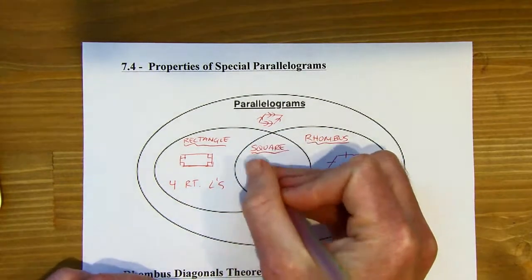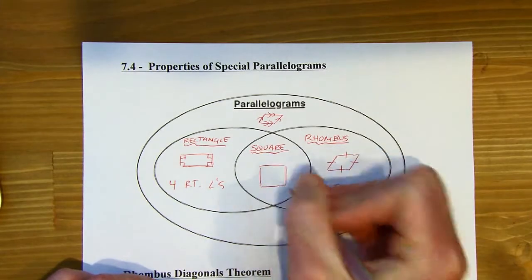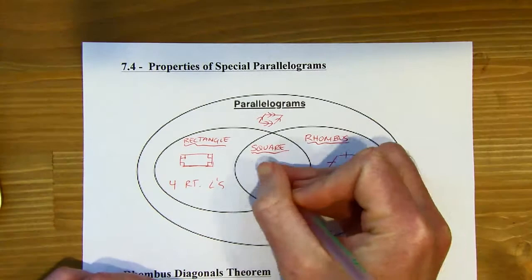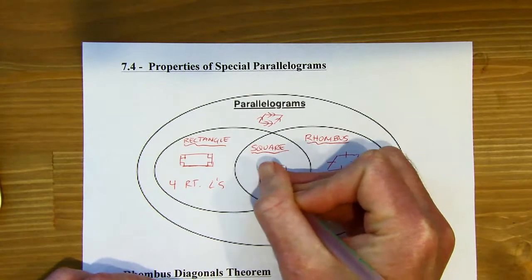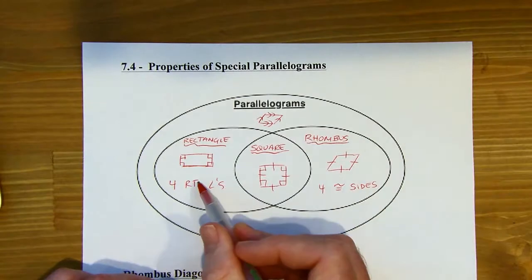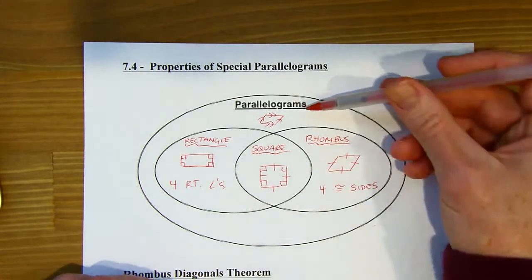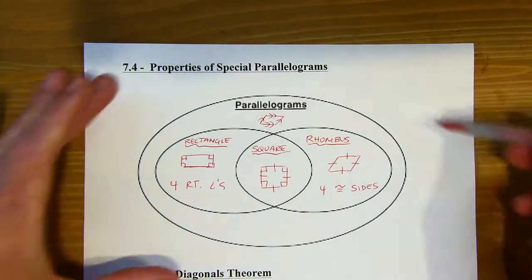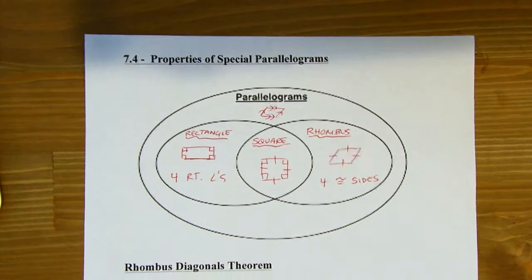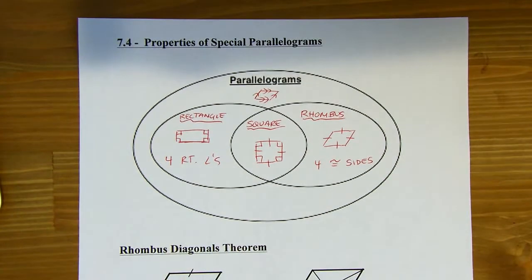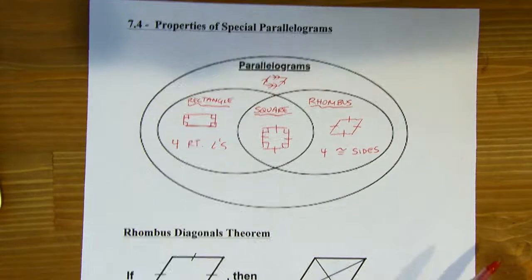A square is a quadrilateral with four right angles and four congruent sides. So it's a rhombus and also a rectangle — it's a special kind of rectangle. And then it's also a parallelogram. That kind of shows the whole world; everything outside of the Venn diagram would be things that aren't parallelograms.